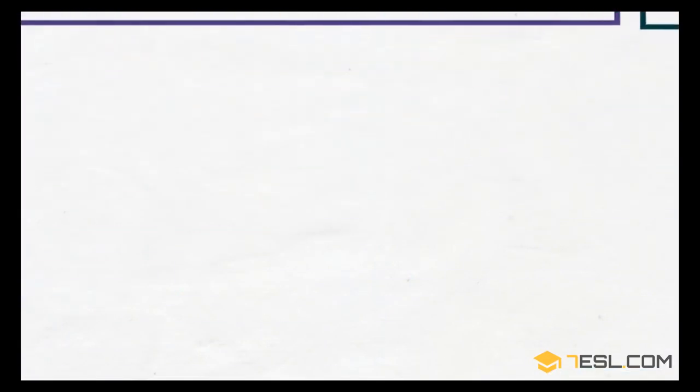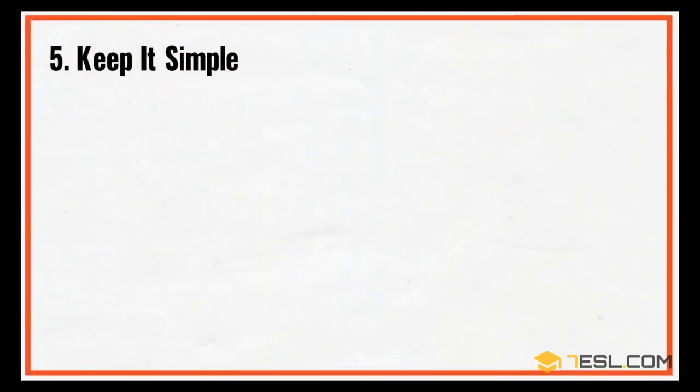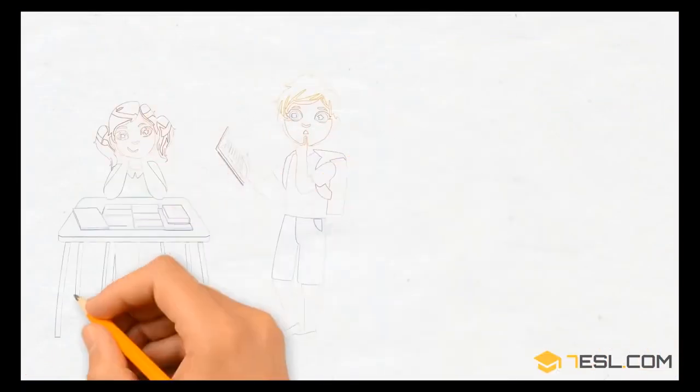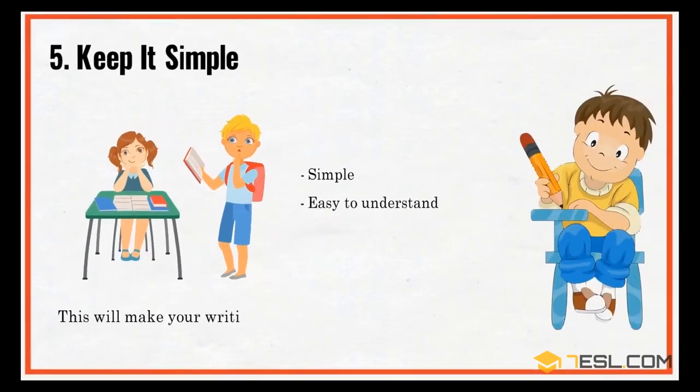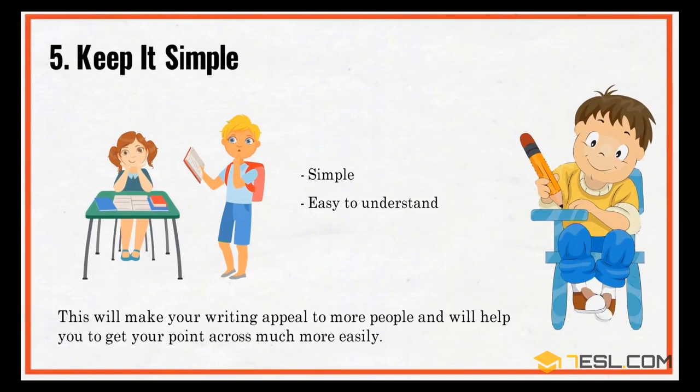5. Keep it simple. When writing, it is important that you consider your audience. Unless you are writing a technical manuscript that will be read by people who will understand the jargon and technical phrases, you should keep your wording simple and easy to understand. This will make your writing appeal to more people and will help you to get your point across much more easily.